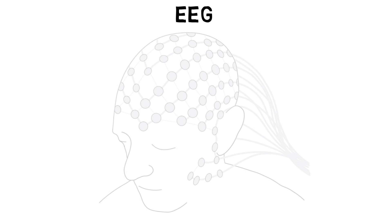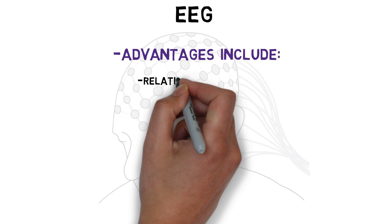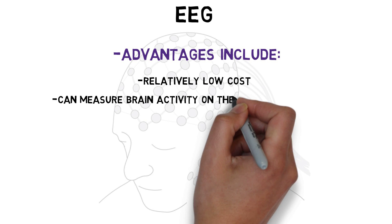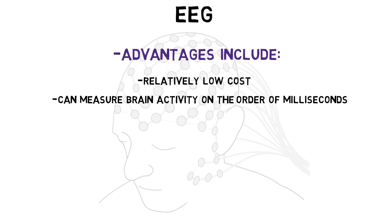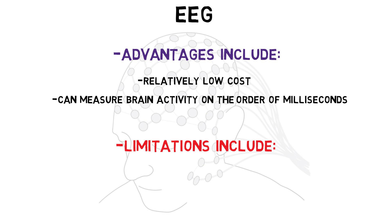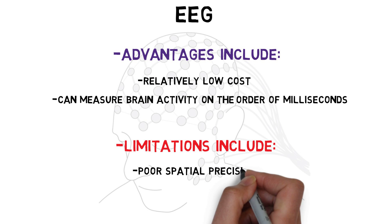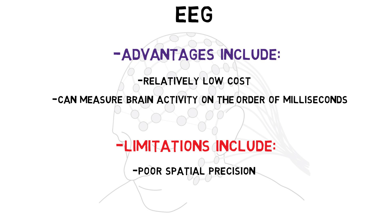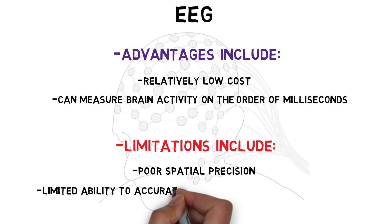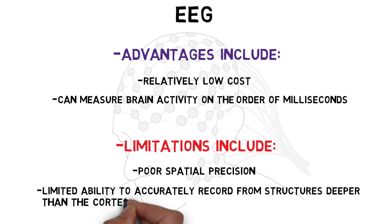While there are many advantages to using EEG, such as its low cost and ability to measure brain activity on the order of milliseconds, there are some limitations as well. For example, because EEG monitors activity in large groups of neurons, it is difficult to pinpoint activity seen using EEG to a precise location in the brain, and it records the activity of neurons in the cortex, but is limited in its ability to accurately record activity in deeper structures of the brain.